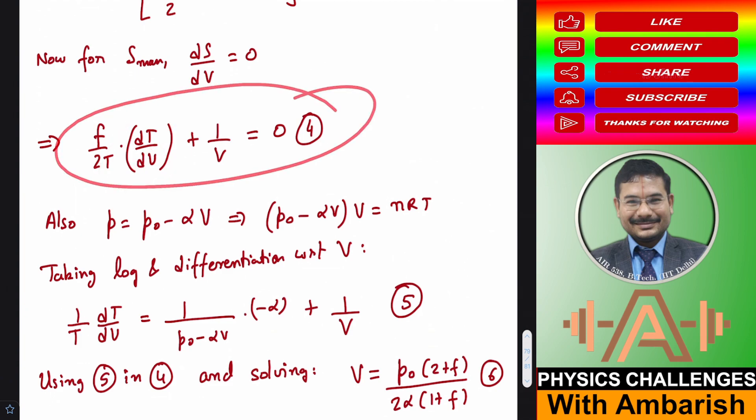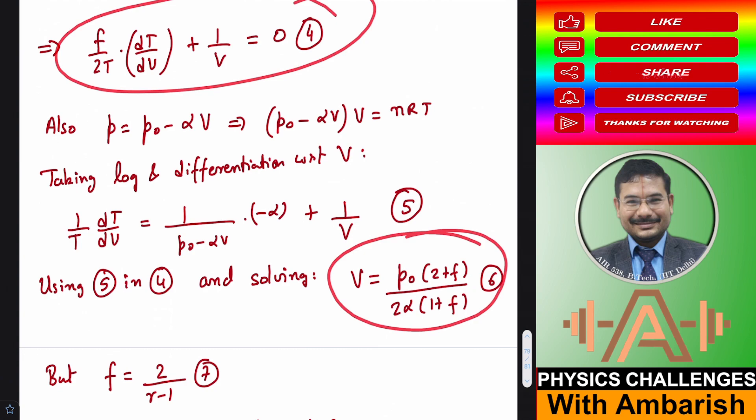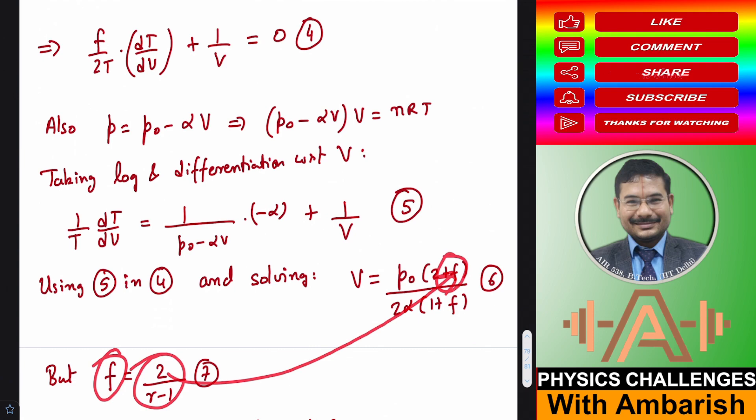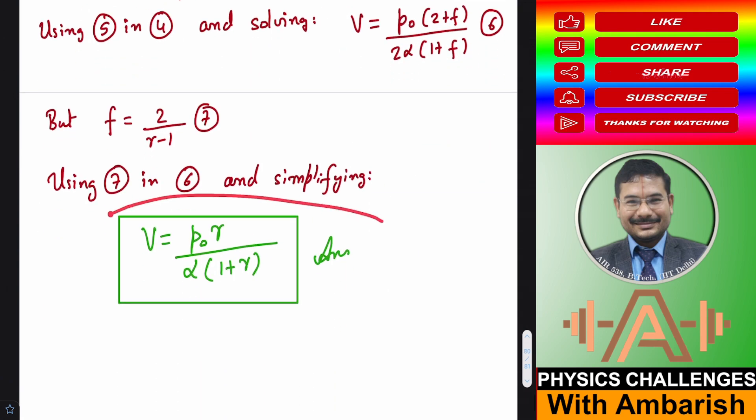And if you do that, you get volume in terms of degrees of freedom as P₀(2+F) divided by 2α(1+F). And of course, you know the relationship between the degrees of freedom and γ. Degrees of freedom is 2/(γ-1). So you can substitute that and again simplify. And if you do that, you get volume for maximum entropy as P₀γ divided by α(1+γ). So that was my analysis for this problem Irodov 2.138.